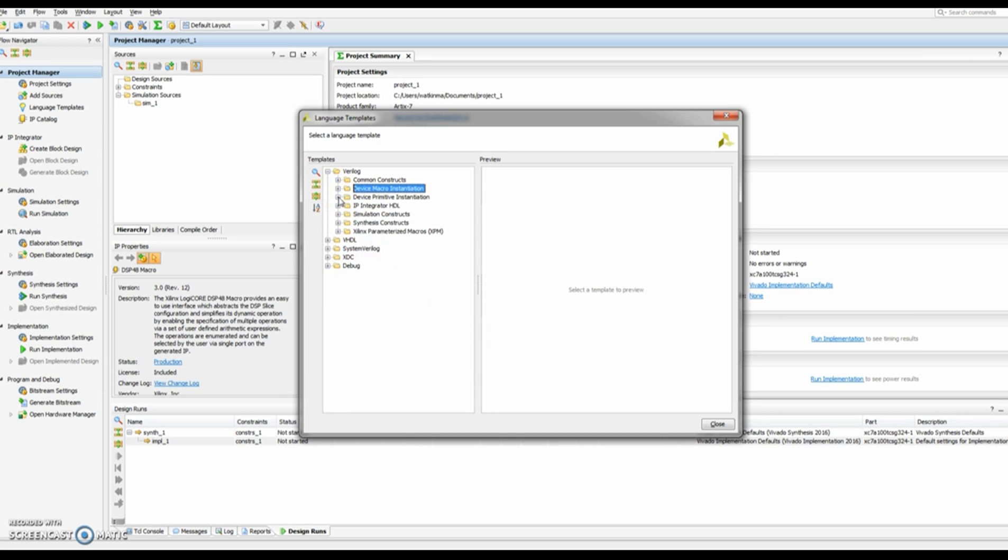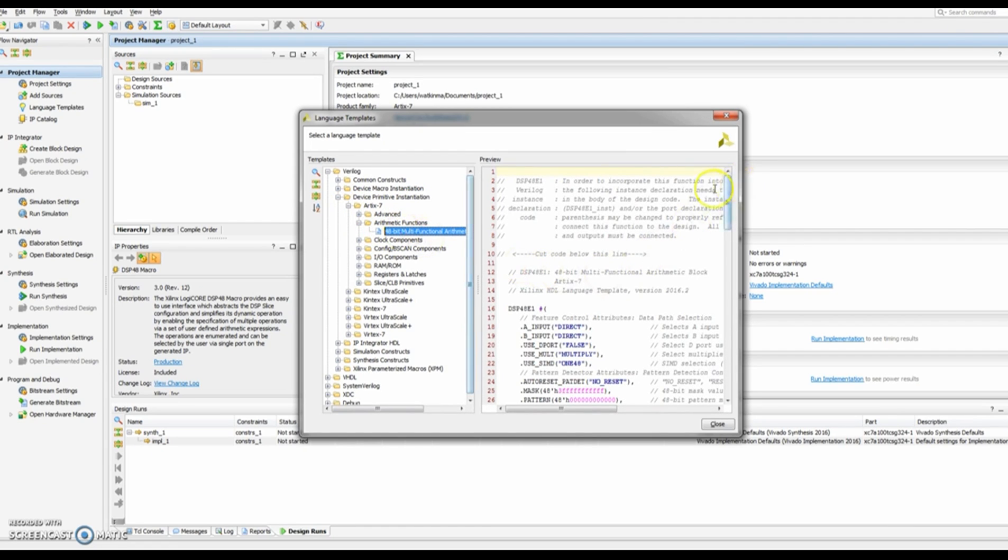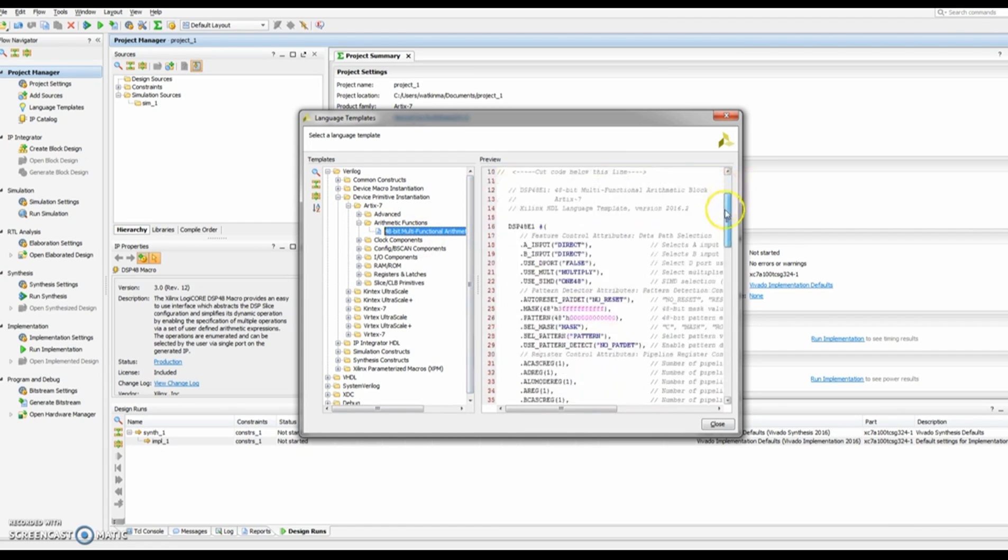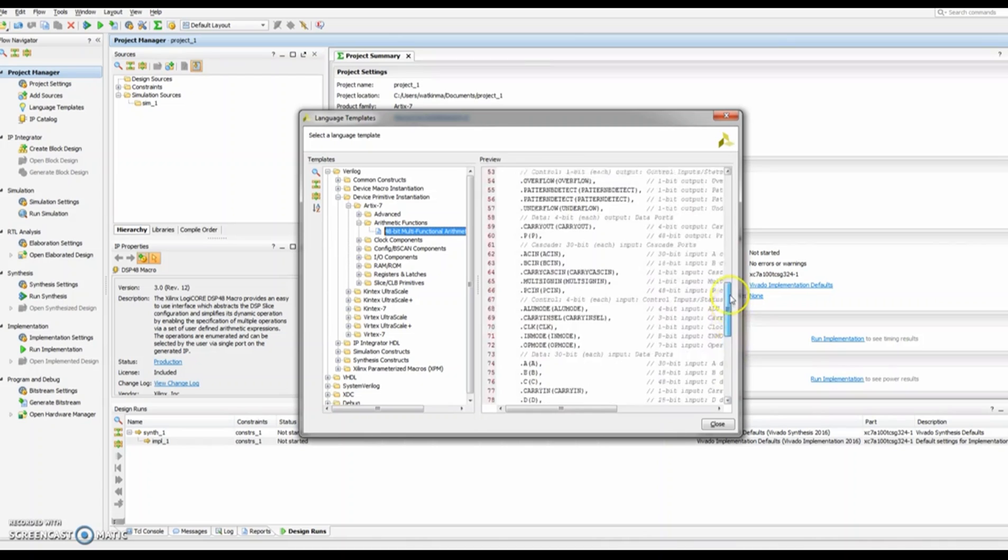You can also find the template for the DSP under the device primitives instantiation and then under the arithmetic functions there is a 48-bit multi-function arithmetic unit and you can see under here it's got the full template for the DSP and you can see the many options that are available.